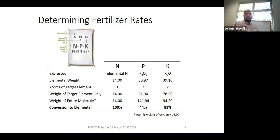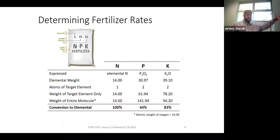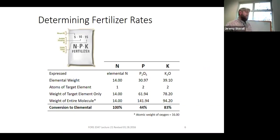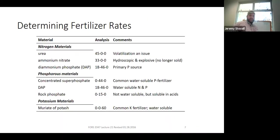Using those conversion factors: a bag labeled 10% P actually contains 10 × 0.436 = 4.36% elemental phosphorus. Once you know those numbers — 43.6% for phosphorus and 83.3% for potassium — they don't change. Keep that in mind when working with common fertilizers used in forestry, where the bag rates are not the true elemental rates for phosphorus or potassium.